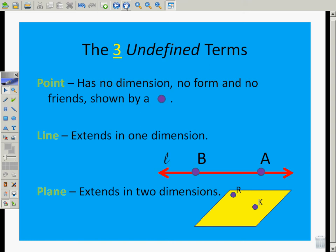And so what we're doing here with the point, it has no dimension, it has no form, and it has no friends. It's shown by a dot. And so it's one of many, and yet it is nothing. We represent it with a little bitty dot because we want to try to be able to talk about a point. And so this is the diagram for it.